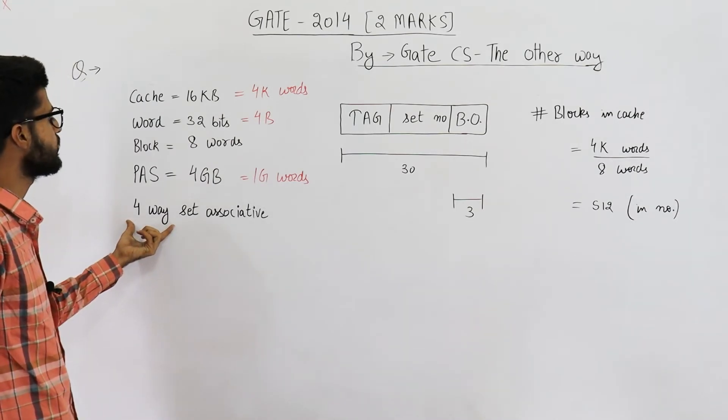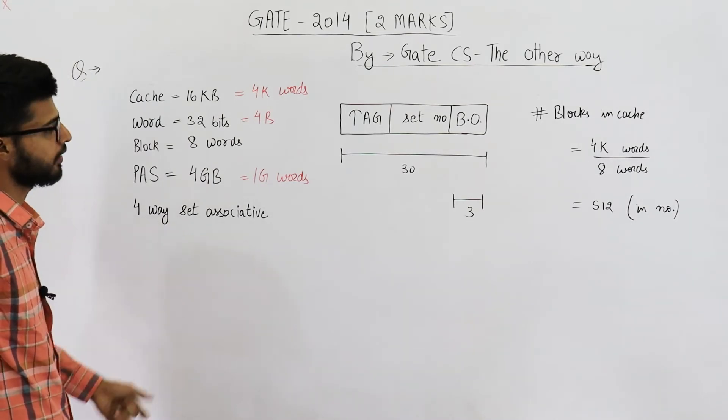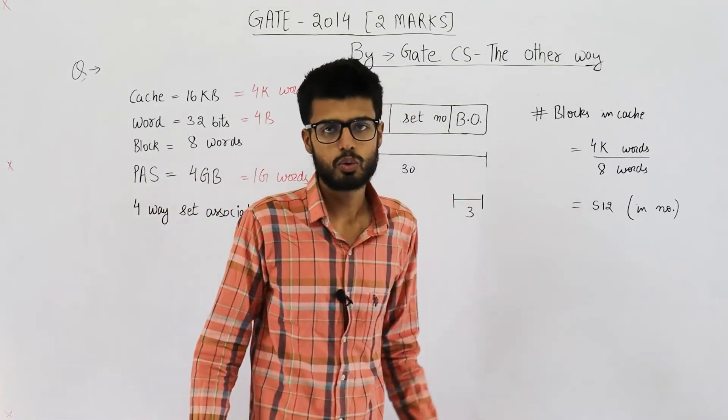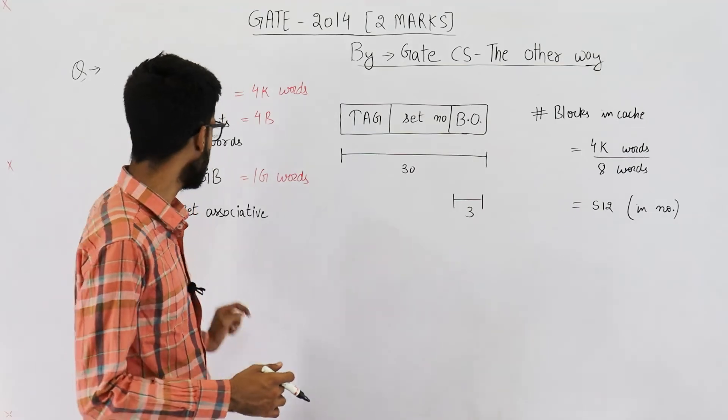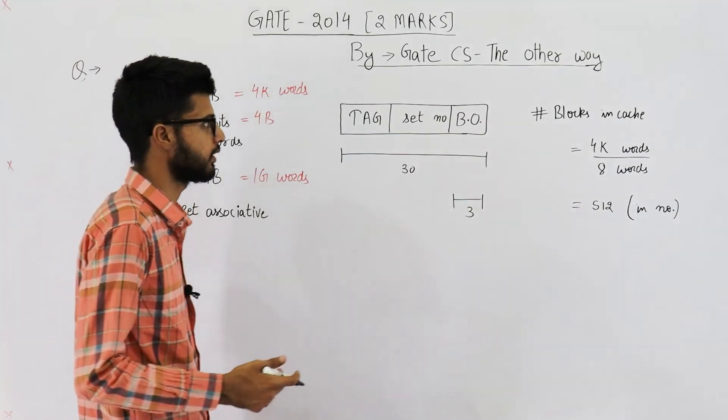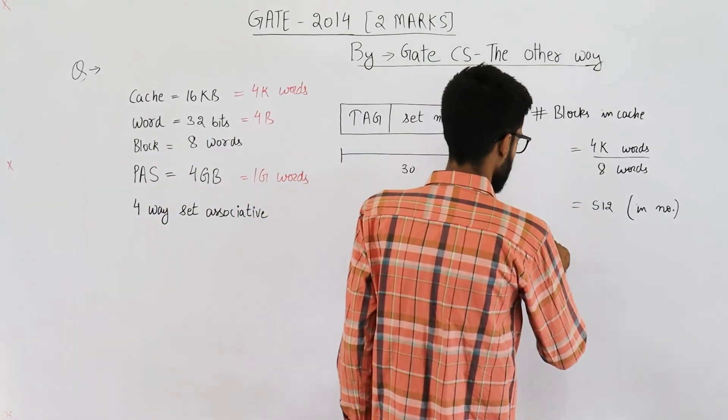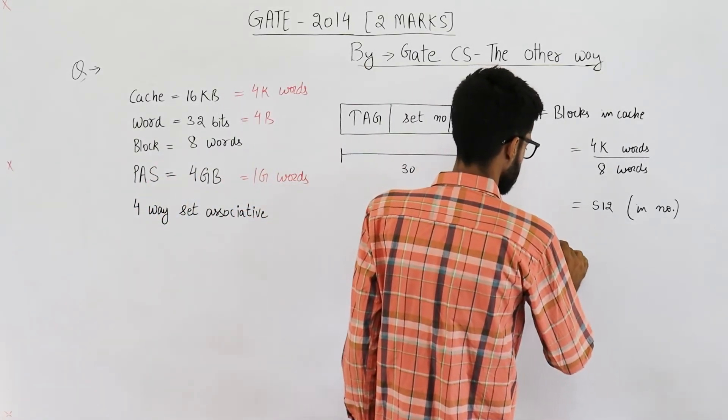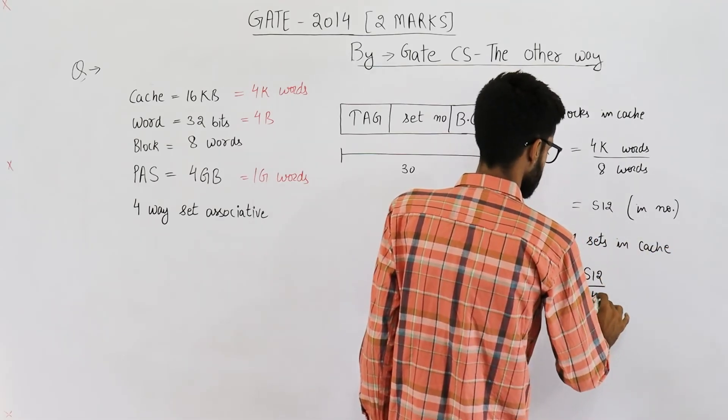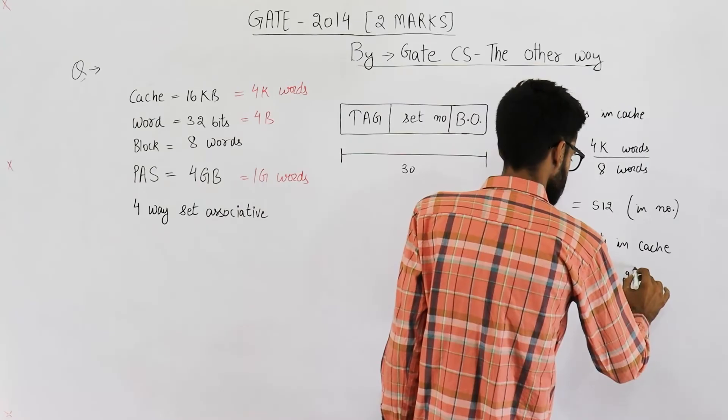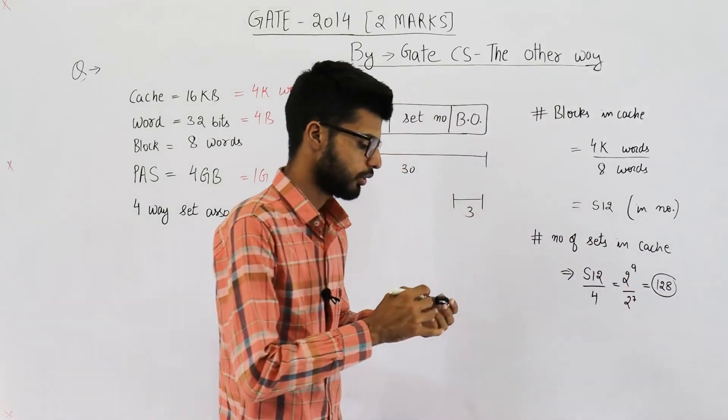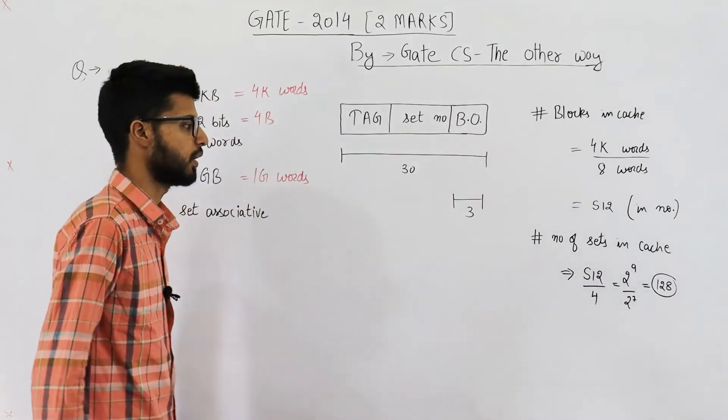Also, it is a 4-way set associative memory. How many sets will be there? If there are total 512 blocks and one set contains 4 blocks, how many sets will be there in total? Number of sets... So the number of sets will be 128.